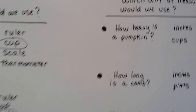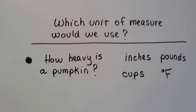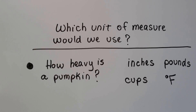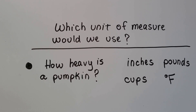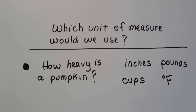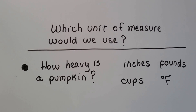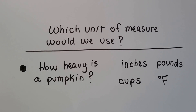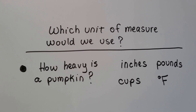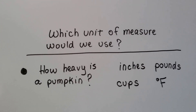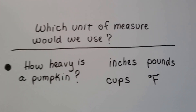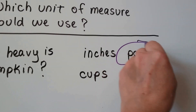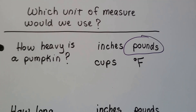Now let's see which unit of measure we would use. If we wanted to know how heavy a pumpkin is, would you measure it in inches, pounds, cups, or degrees Fahrenheit? How heavy a pumpkin is — we would measure that in pounds. If you said pounds, you got it right.